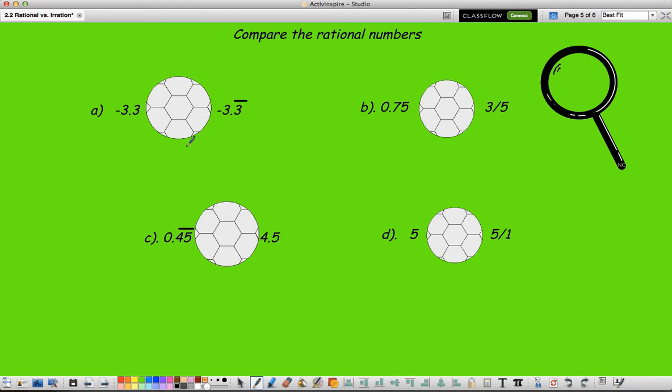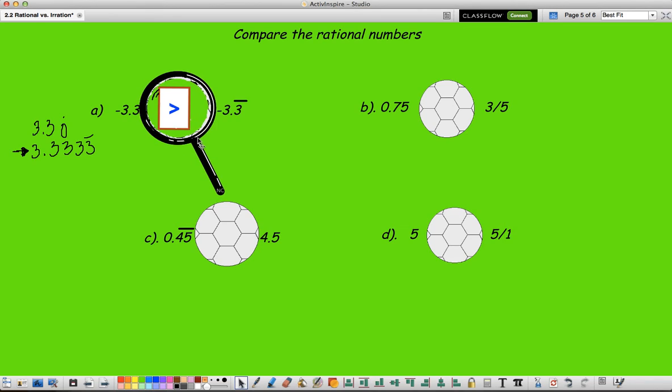Now we're going to compare rational numbers. Here I have negative 3 and 3 tenths, and here I have negative 3 and 3 tenths repeating. So I have to think, when I have a negative number, the further away it gets from 0, the smaller it is. So if I ignore the signs and I look at 3 and 3 tenths and I compare it to 3 and 3 repeating, I'm just going to go a couple places out. Well, since this is a 0, we would say that this number is larger. But since they're negatives, it's actually the 3 and 3 tenths that's larger, because 3 and 3 tenths is closer to 0. So in the negative world, that's a good thing to be closer to 0.